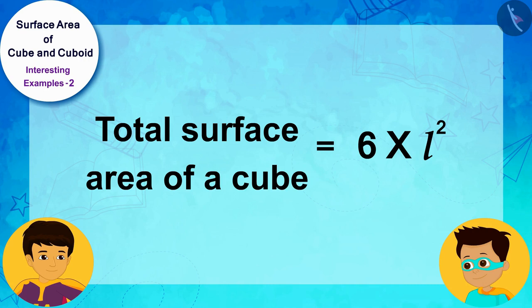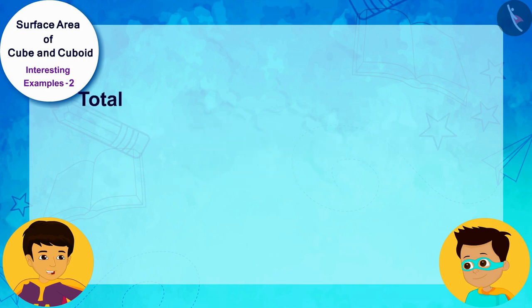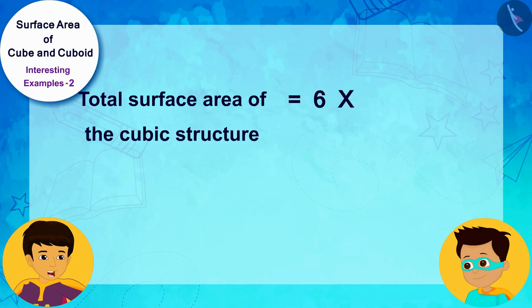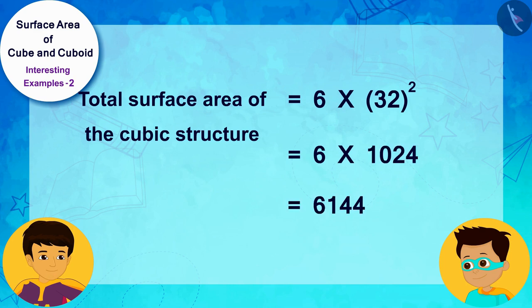Let me quickly find the total surface area of this cubic structure by putting 32 inches as the side of this cube.